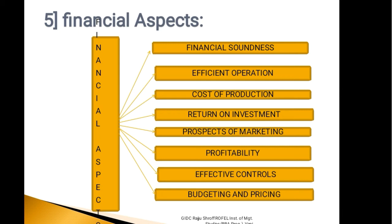These are the parameters based on which the scope of the aspect of appraisal may vary. Financial aspect analyzes major criteria — you can see from the chart — that is Financial Soundness, which we already discussed as the objective of Financial Aspect, so that financial institutions may have interest to invest in the project. Other criteria include efficient operation, cost of production, return on investment, prospect of marketing, profitability, effective controls, budgeting and pricing. Let's discuss the financial aspect in detail.